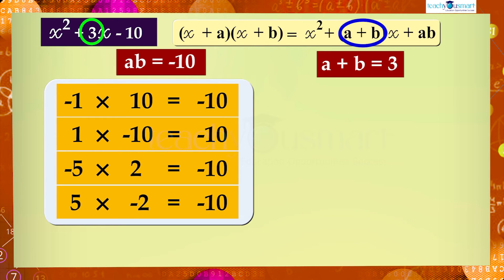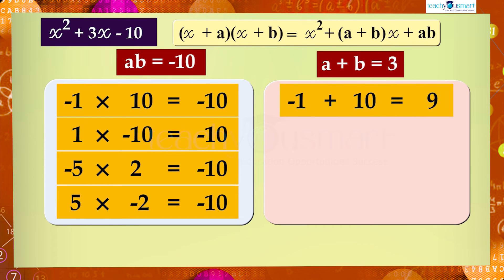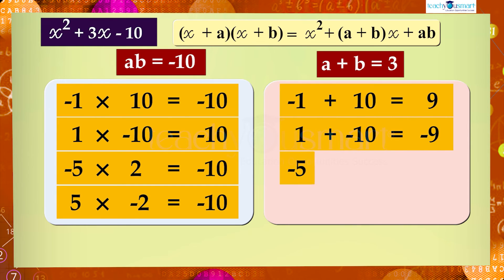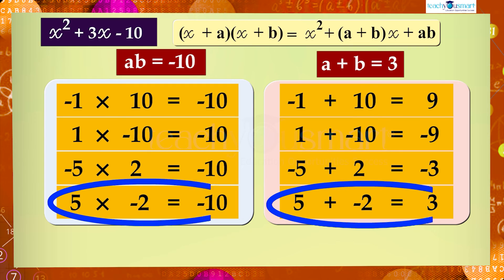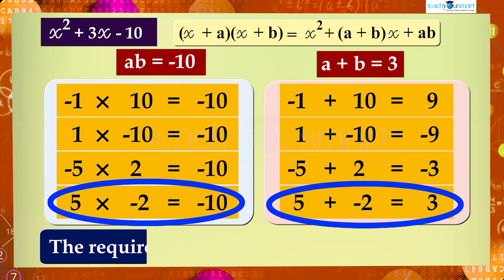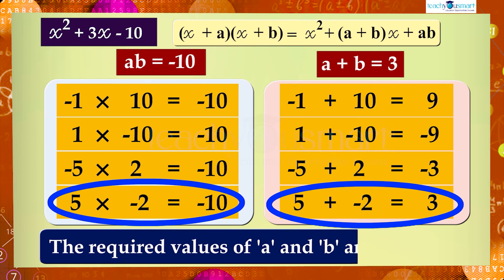We also have a + b = 3. Here the sum is positive and the product is negative. Using the possible values: (−1) + 10 = 9; 1 + (−10) = −9; (−5) + 2 = −3; 5 + (−2) = 3. From this it is clear that the required values of a and b are 5 and −2.